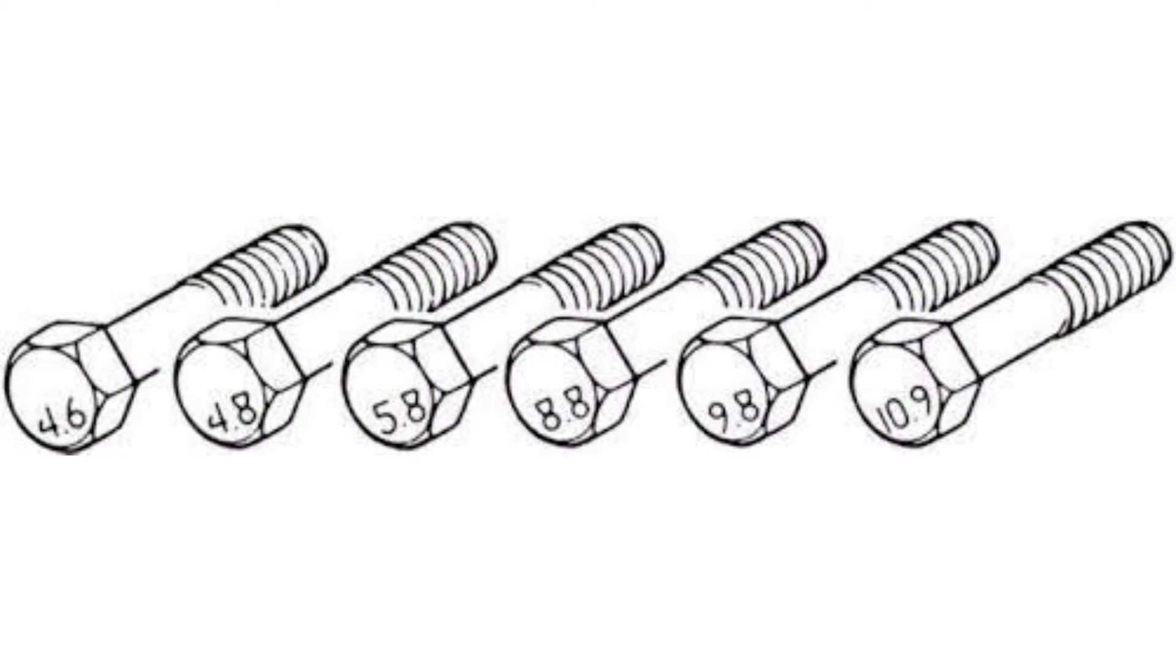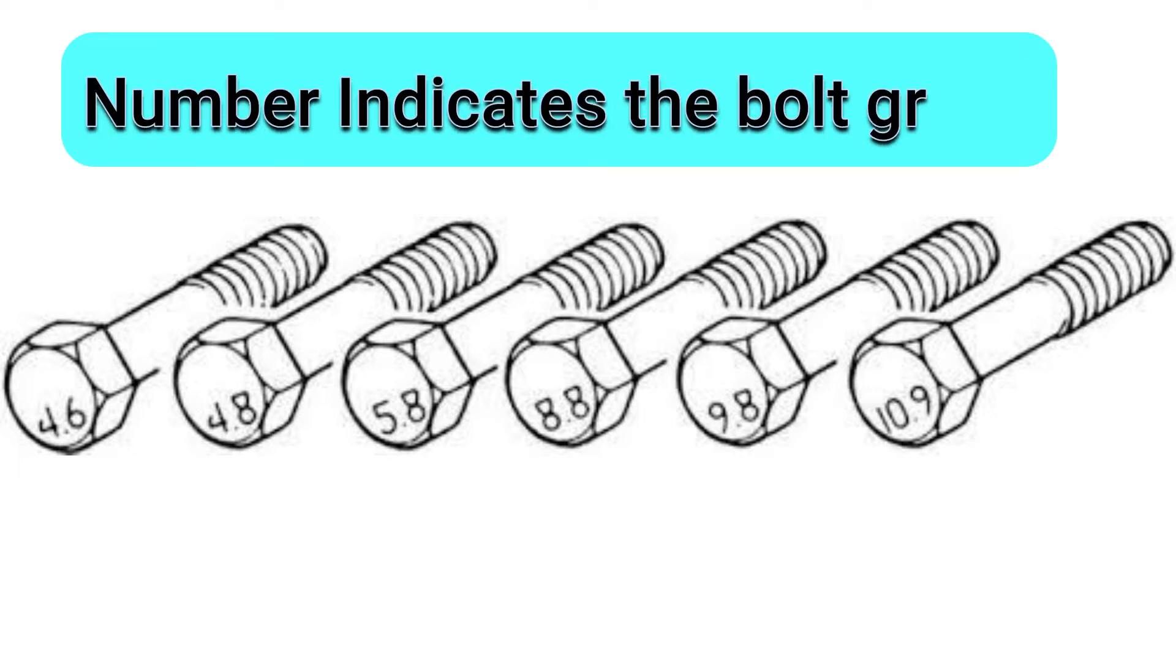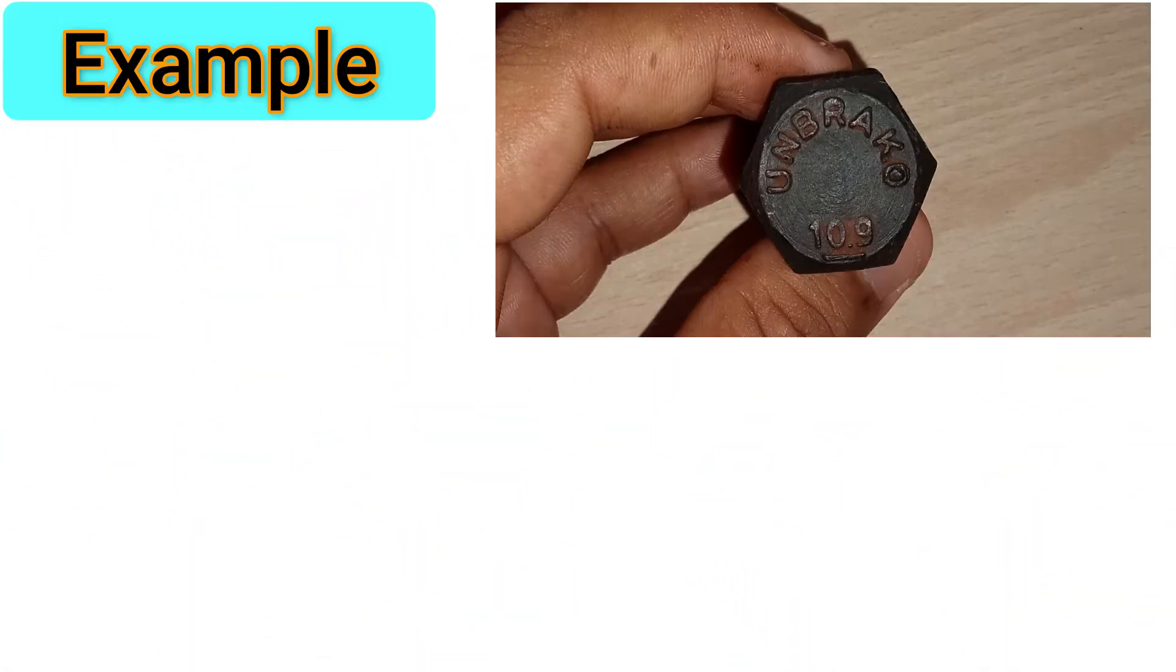For example, here you can see 4.6, 4.8, 5.8, 8.8, 9.8, and 10.9. What does this mean? These numbers are nothing but the bolt grade. There is a relationship between the numbers and the bolt grade - that is, higher the number, stronger the bolt. In this example you can see 10.9 written on the head of the bolt.